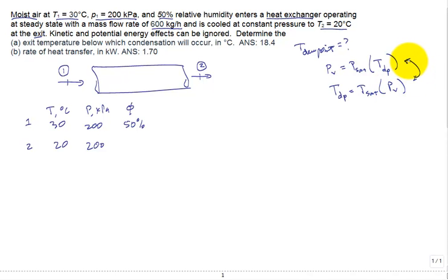So what do we do? Well, let's find the partial pressure of the water vapor in the mixture. Well, at 50% relative humidity, I find PSAT at the 30 degrees C. At 30 degrees C, that comes in at 4.246 kPa. I multiply by the relative humidity to find PV, 2.123 kPa.